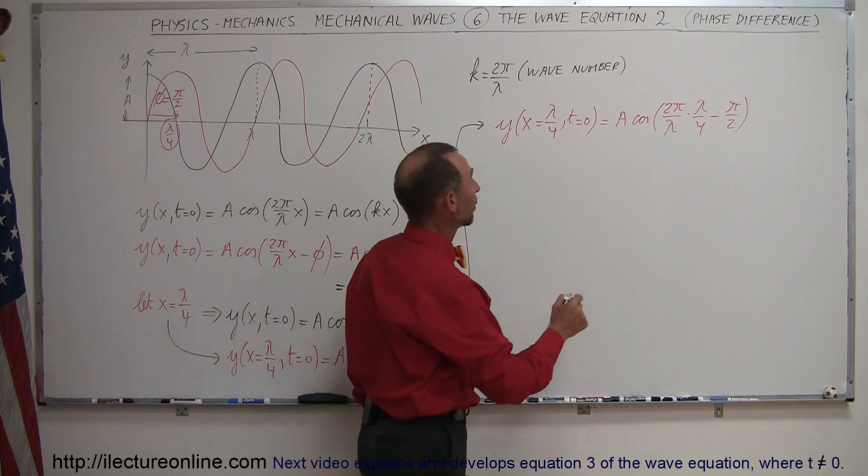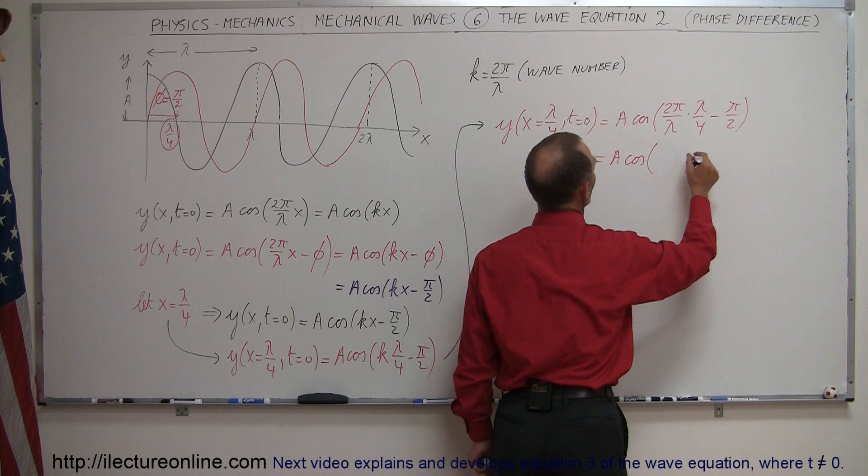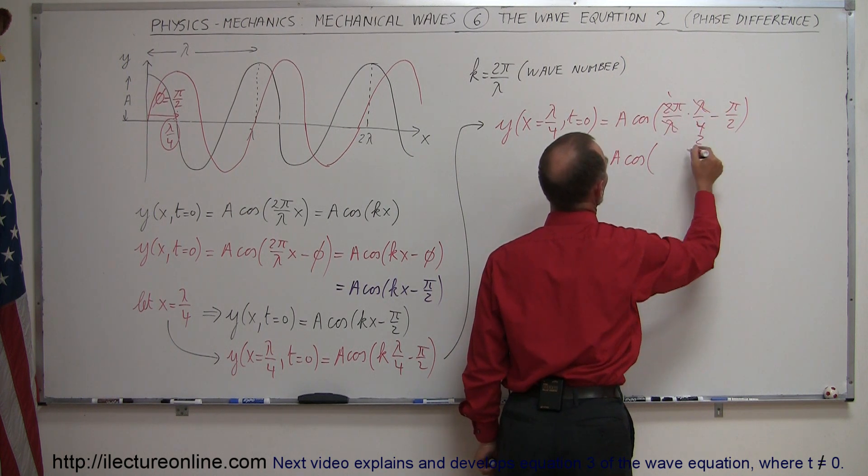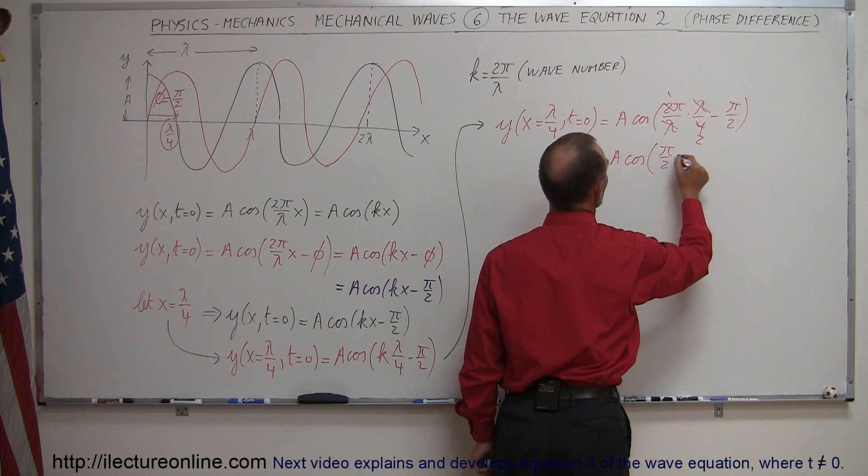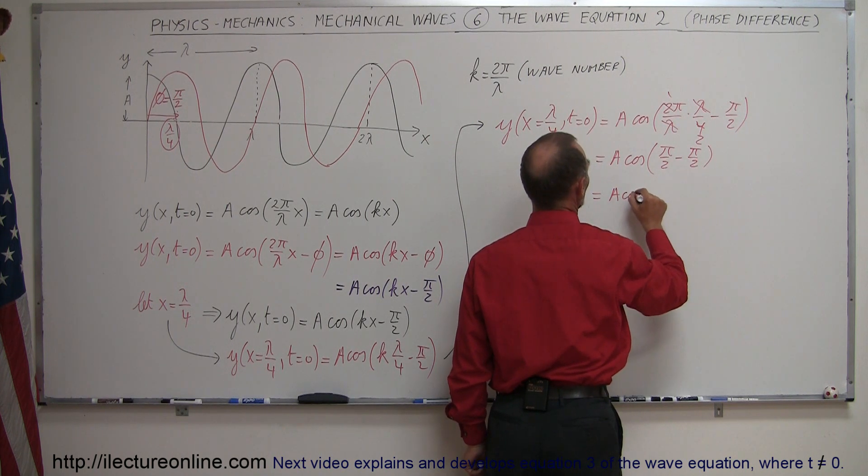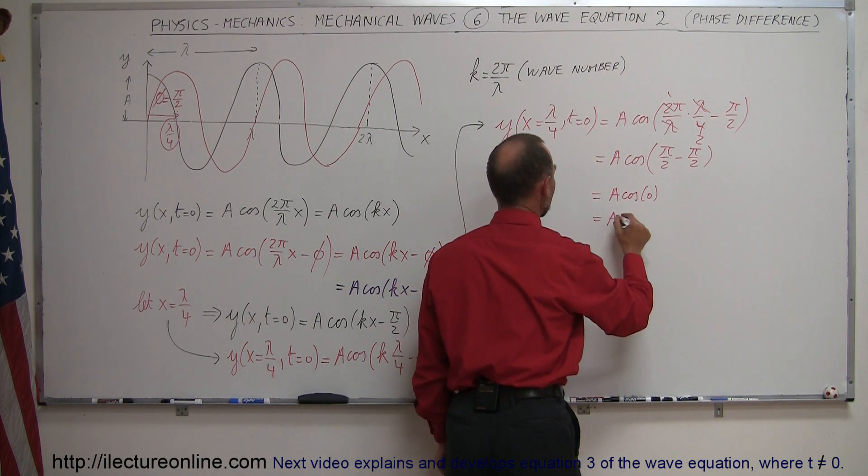All right, now let's simplify that. See what we get. So this is equal to a times a cosine of, and notice the lambdas cancel out, and 2 divided by 4 is 1 over 2. So we get pi over 2 minus pi over 2, which is equal to a times a cosine of 0. And of course, the cosine of 0 is 1, which is simply equal to a.